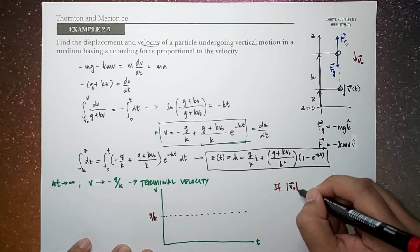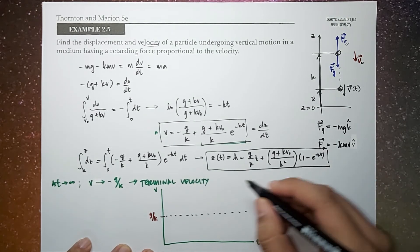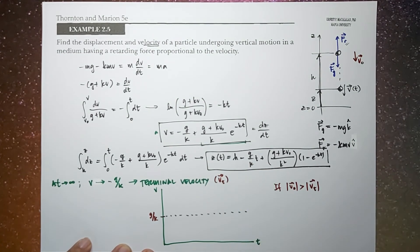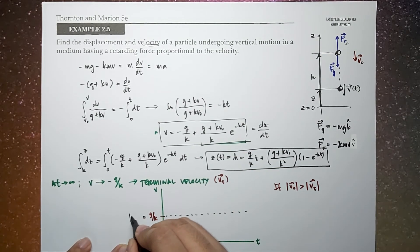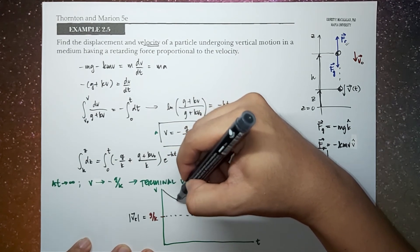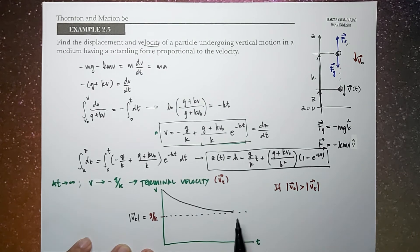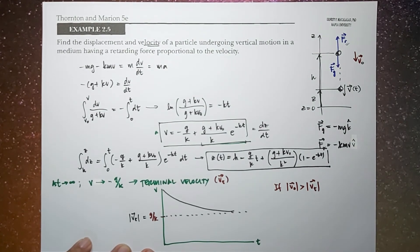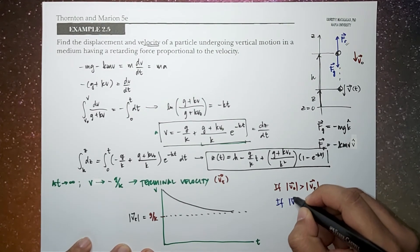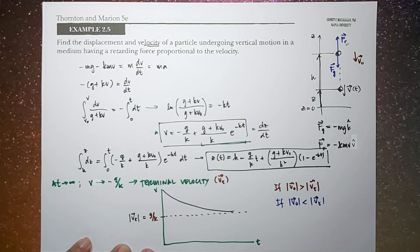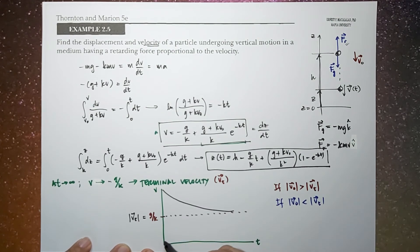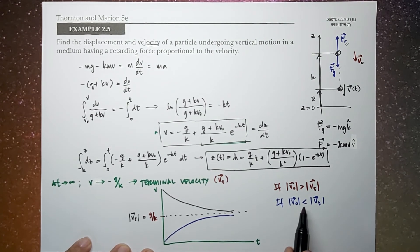If the magnitude of the initial velocity is greater than the terminal velocity v_t, the graph shows that the object will immediately begin to slow down exponentially, and v would approach the terminal speed from above. On the other hand, if v-naught is less than v_t, meaning initially the object is moving slower than terminal velocity, the speed will increase and then approach the terminal velocity from below.